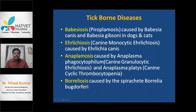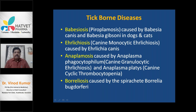Anaplasma in canines - Anaplasma phagocytophilum produces a disease known as canine granulocytic ehrlichiosis or canine granulocytic anaplasmosis. This is termed such because Anaplasma phagocytophilum can harbor the granulocytes. Anaplasma platys harbors inside the cytoplasm of platelets, so it is known as cyclic thrombocytopenia.